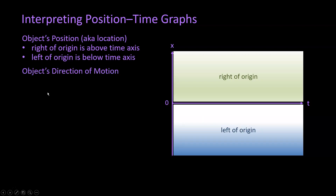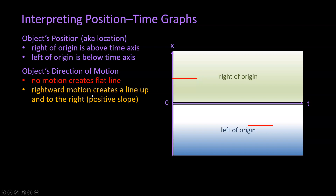Let's take a look at the object's direction of motion and how we interpret that. I'm going to bring up different segments of that position time graph, not in chronological order. If we have no motion, we're going to get a flat line, as we see here. A flat line is created because the y-axis represents position — if we have no change in motion, we're going to have no change in the y coordinate, and that creates a flat or horizontal line. Next, rightward motion creates a line up and to the right, or a positive slope. If we're moving in the positive direction, we're going to have a change in our y coordinate away from the time axis in the upward direction.